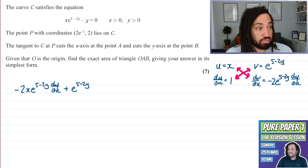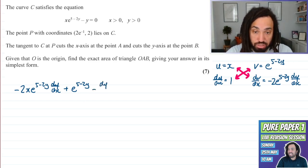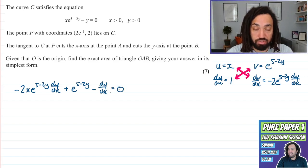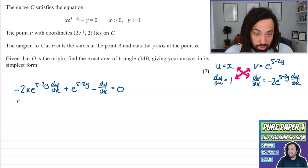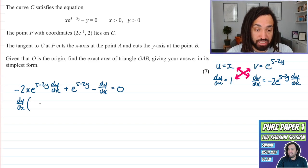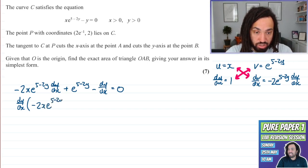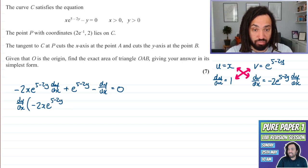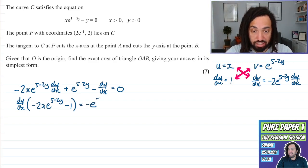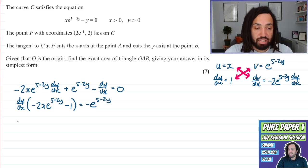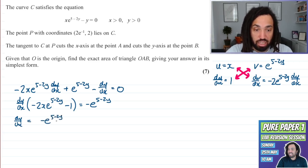Okay, now the next term is Y and that differentiates with respect to X to DY by DX and 0 differentiates to 0. Now we've got two DY by DX's here so what I'm going to want to do is take the two terms that have DY by DX in and factorize out the DY by DX. So we get minus 2 X E to the 5 minus 2Y for the first term and then for the next term it's just minus 1. Okay great. Now this other term here we're going to move to the other side become minus E to the 5 minus 2Y and then what we can do is we can divide through and this will give us DY by DX as the subject.